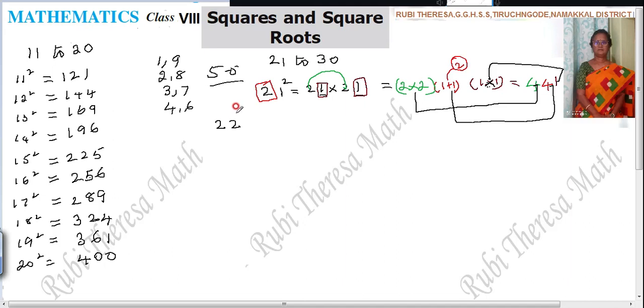That is 22 into 22. Which one you have to take? Unit places. 2 2's are 4. Next one is what? 2 plus 2. That is 4. 2 plus 2 is 4. That is 4 into 2. 2 2 2's are 4. That is 2 2's are 4. 4 2's are 8. Then 4. 484.